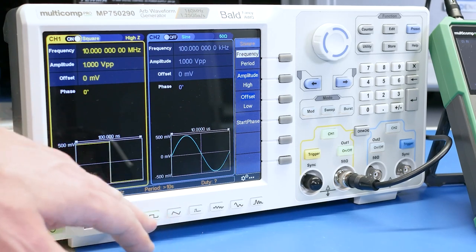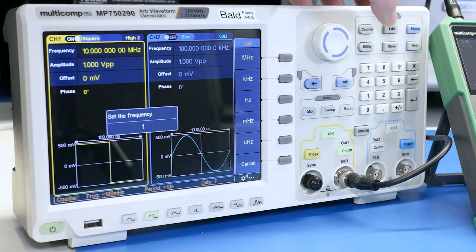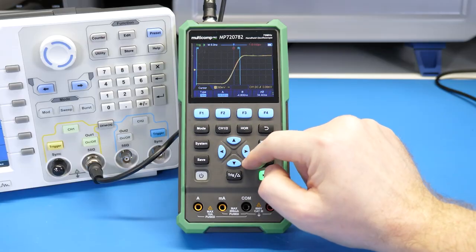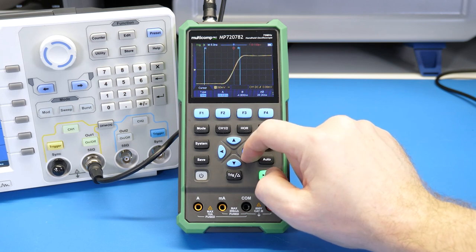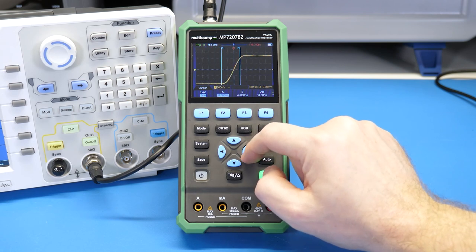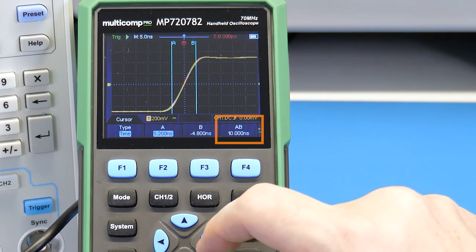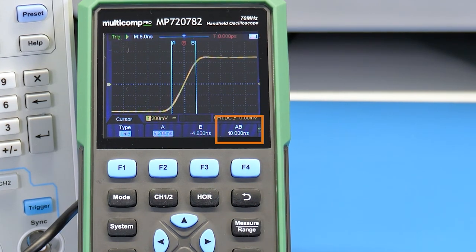When in square wave mode, this AWG outputs an 8 ns edge. On the scope DMM, there is no rise time measurement. So, I had to use cursors to estimate the rise time to be around 10 ns, which is probably close enough. Since the cursors are only X or Y, that's the best I can do. So let's see how it works with something more fundamental.